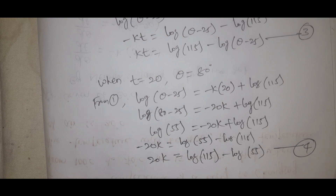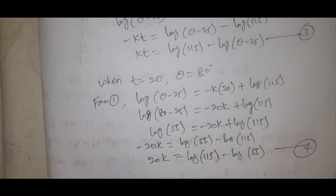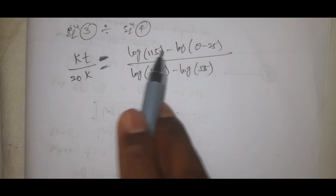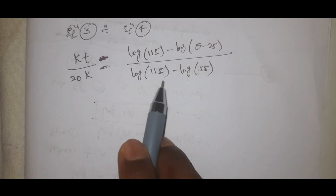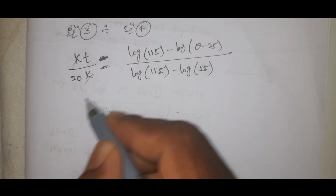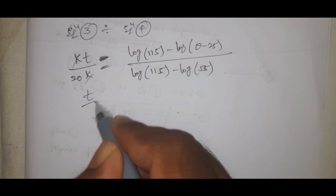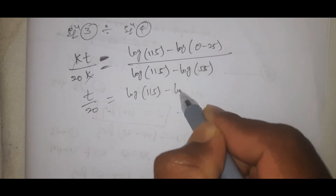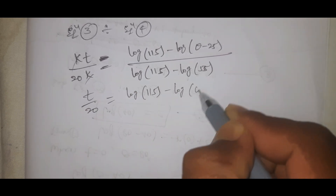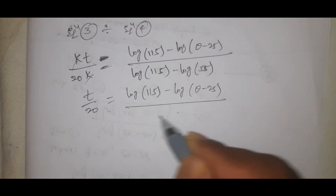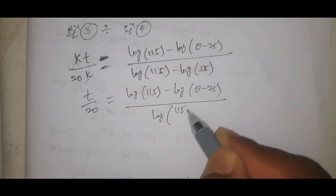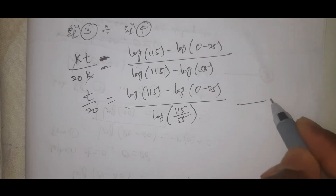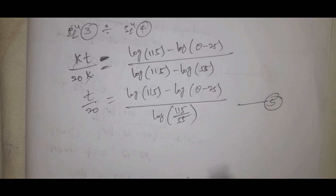Dividing equation 3 by equation 4: t over 20 equals [log(115) minus log(theta minus 25)] divided by [log(115) minus log(55)], which simplifies to log(115/(theta minus 25)) divided by log(115/55). This is equation number 5.